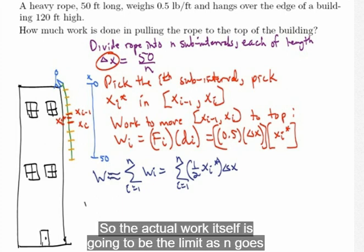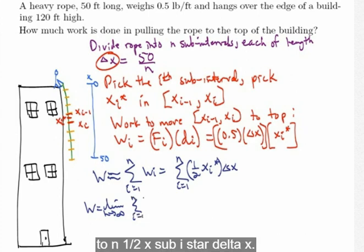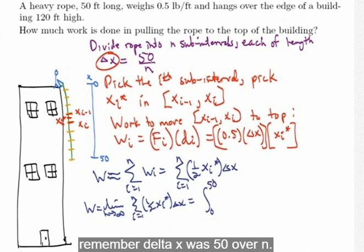So the actual work itself is going to be the limit, as n goes to infinity, of the sum, i going from 1 to n, one-half x sub i star delta x. That's exactly equal to the integral from 0 to 50. Remember, delta x was 50 over n.